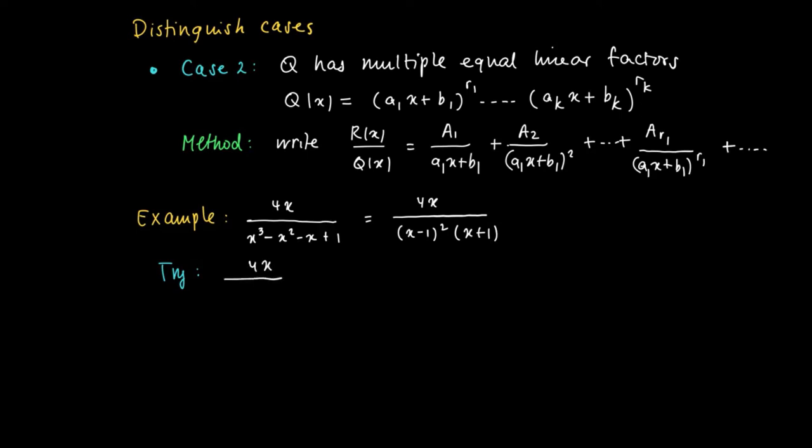So what we're going to try is the following expression. We try to find constants A, B, and C such that we can write the rational function as A/(x - 1) + B/(x - 1)² + C/(x + 1).